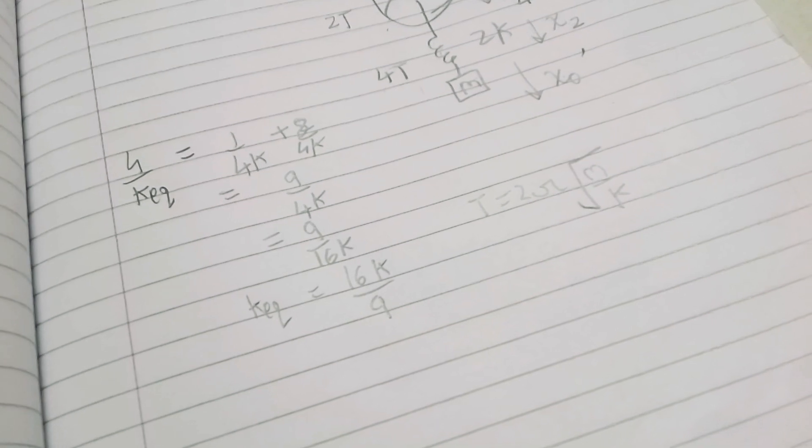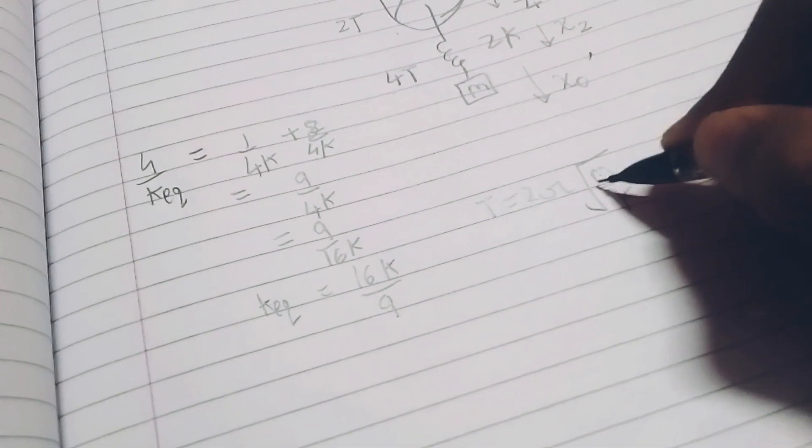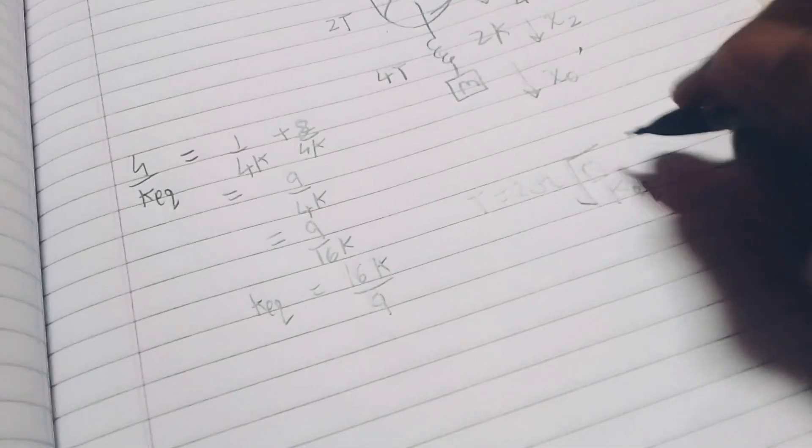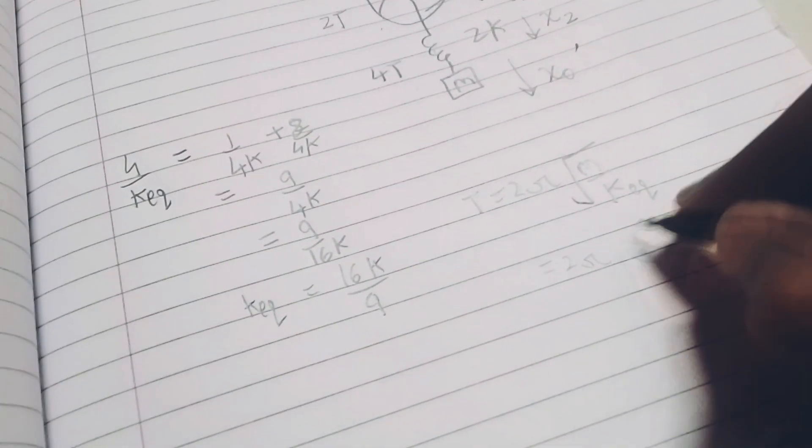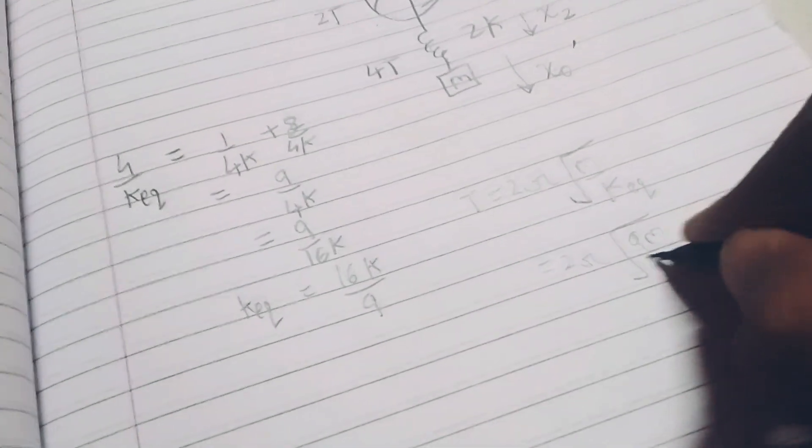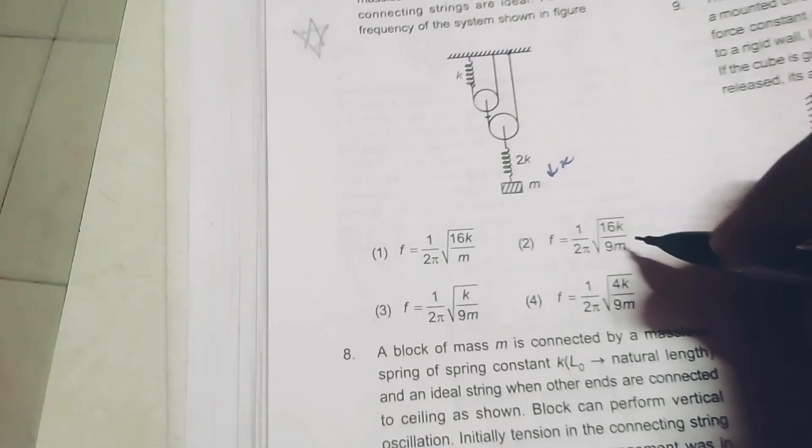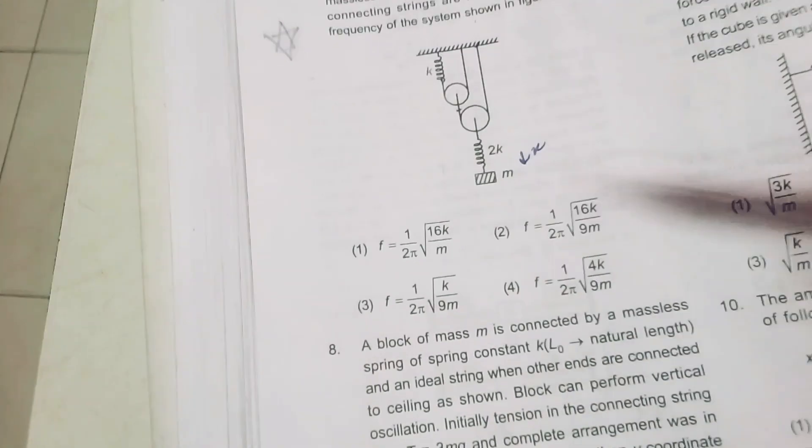Now, m is just given as small m and k is the equivalent one here. So, I have 2 pi under root 9m by 16k. Let's see the options. We are asked frequency, so frequency is 1 by capital T.